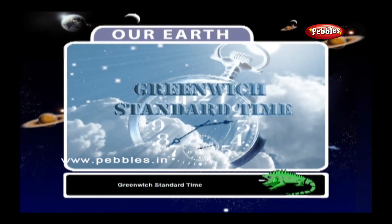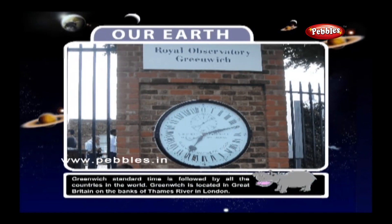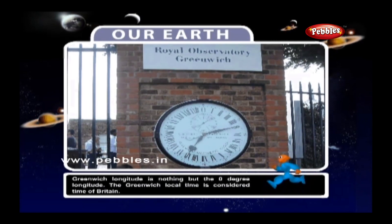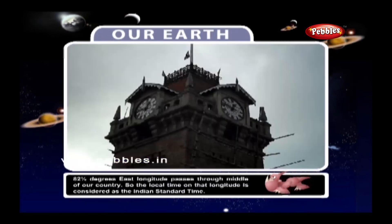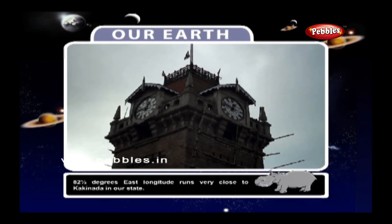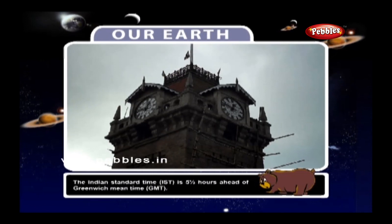Greenwich Standard Time is followed by all the countries in the world. Greenwich is located in Great Britain on the banks of the Thames River in London, and the Greenwich longitude is the zero degree longitude. The Greenwich local time is considered as the standard time of Britain. For Indian Standard Time, 82.5 degrees east longitude passes through the middle of our country, running very close to Kakinada in our state. The Indian Standard Time is 5.5 hours ahead of Greenwich Mean Time.